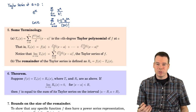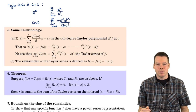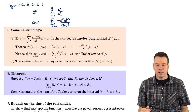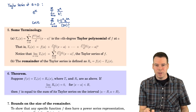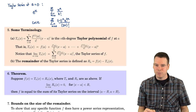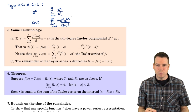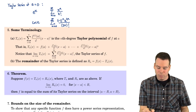Now what about sine? Think about that. If we did the same thing for the sine function — sine is an odd function — what do you think about its Taylor series expansion? What terms should survive? What powers of x would be left? I'll leave that for you to ponder.